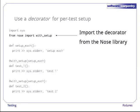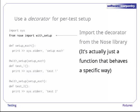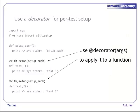We import the decorator called with_setup from the Nose library just as if it were a function, because it actually is a function, just one that behaves in a special way. We then put @decorator, in this case @with_setup, right before the definition of each function that we want to apply it to. This decorator takes an argument, the name of the setup function to run before the test, so we pass that to the decorator just like an argument to a function call.